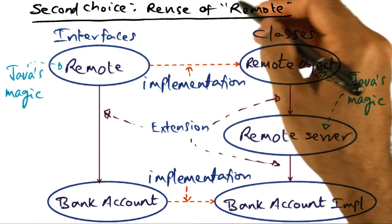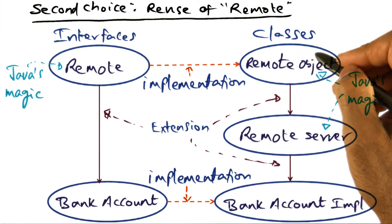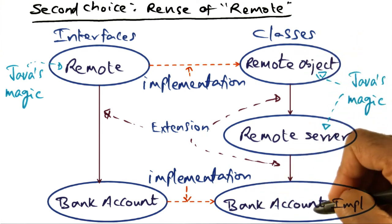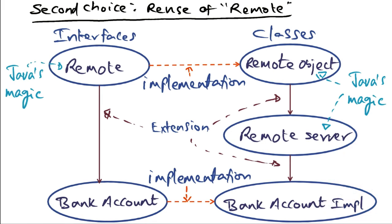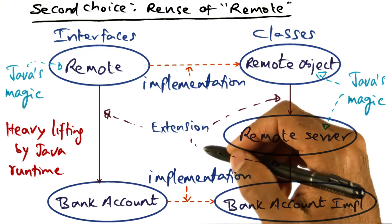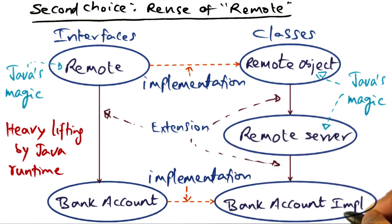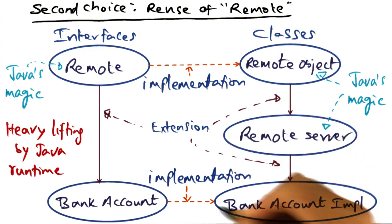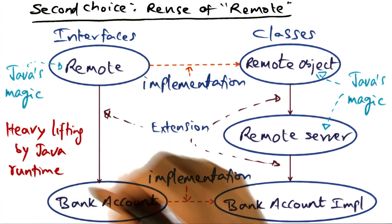So the second choice of reusing remote object class in order to derive this implementation results in the heavy lifting being done by the Java magic. So all of the heavy lifting needed to make this bank account implementation object visible to network clients is being done by the Java runtime.